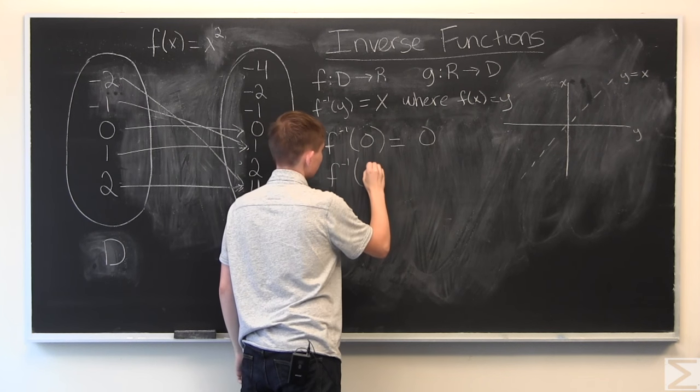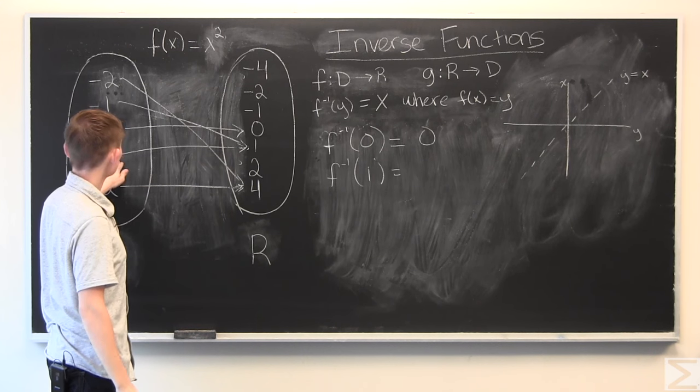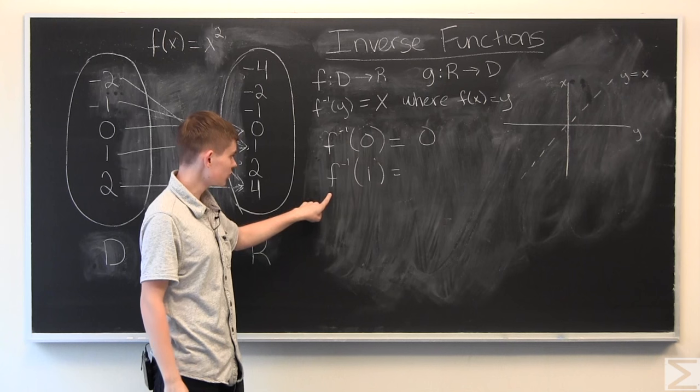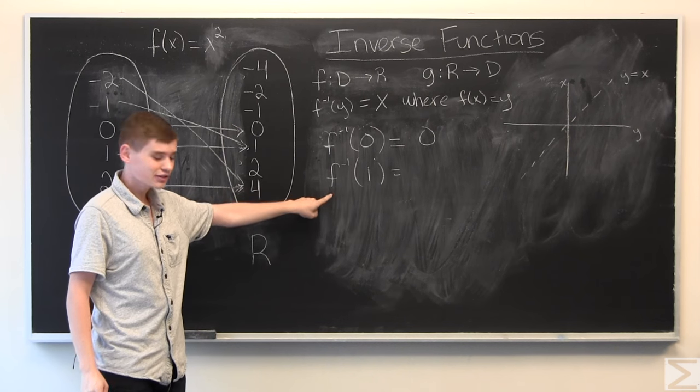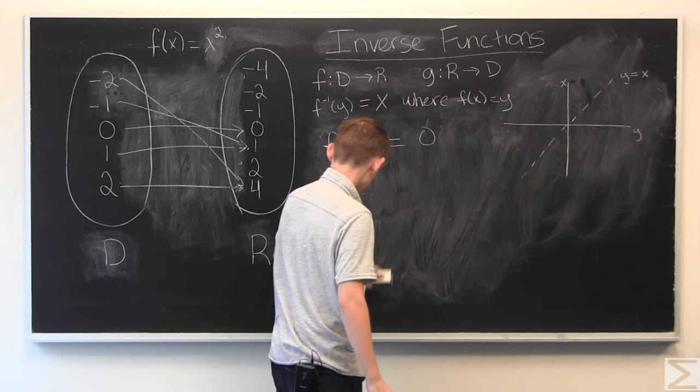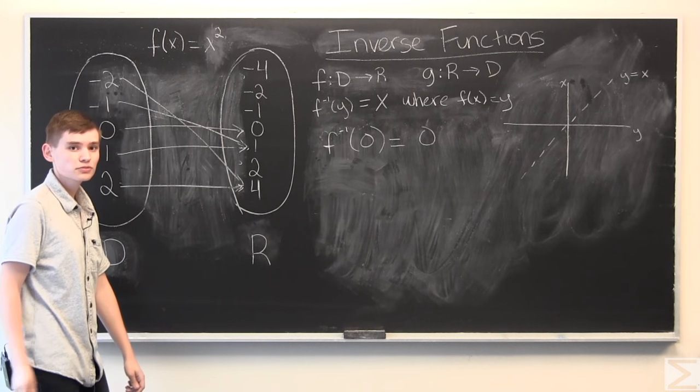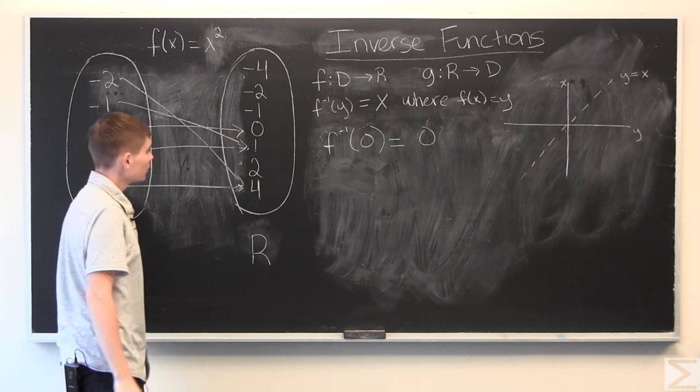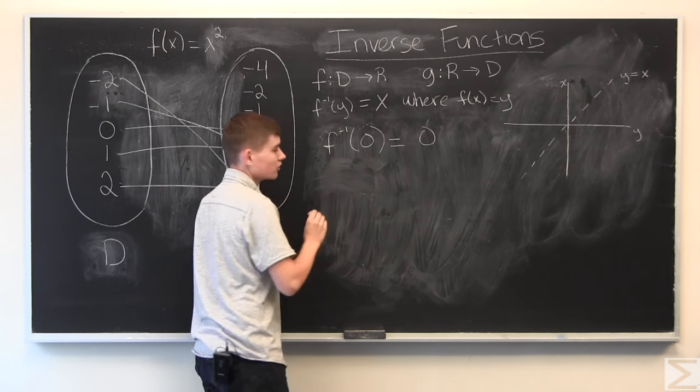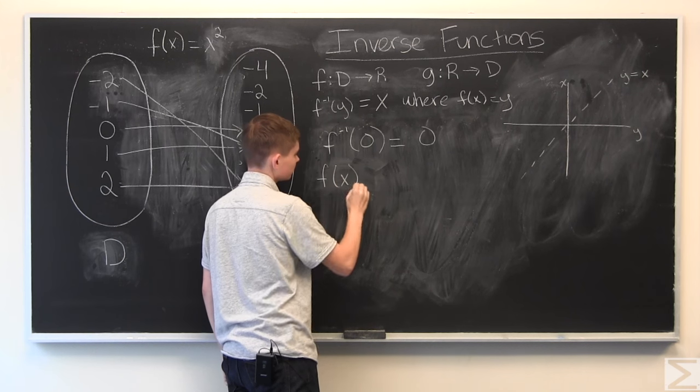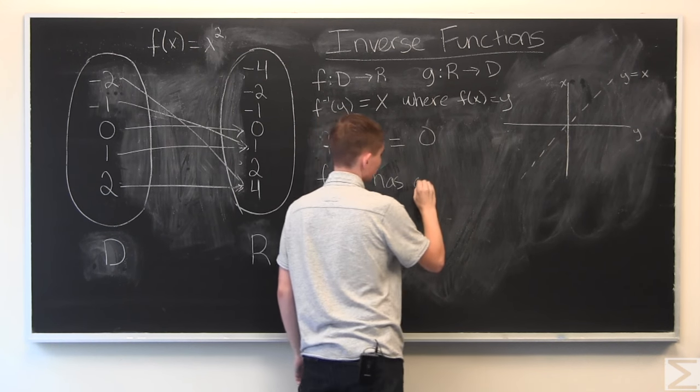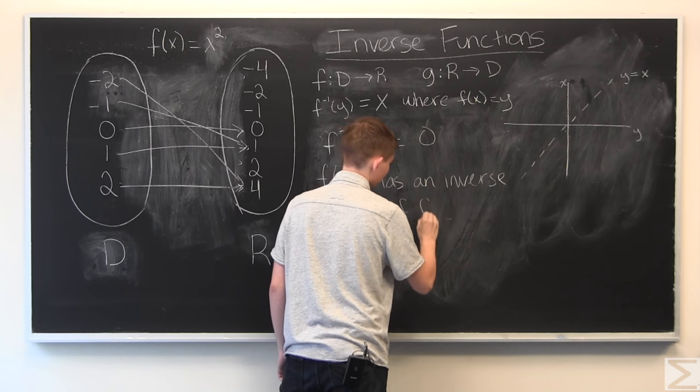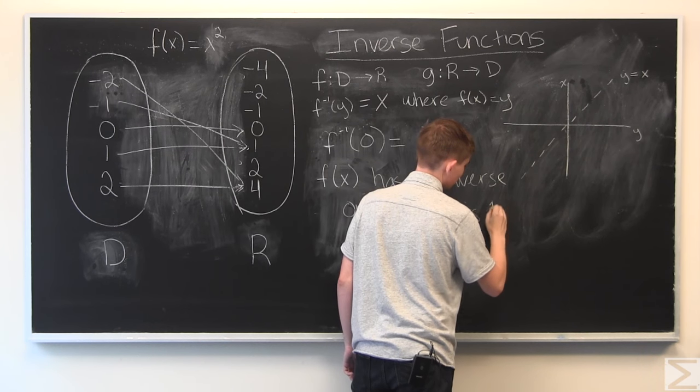But if we try, say, f inverse of 1, we get either 1 or negative 1, which isn't good because functions can only have one output for each input. So, in this mapping, f inverse is not a function, which isn't good. This is because x squared is not 1 to 1. 1 to 1 meaning that for every input, you get one output, and for every output, there is only one input. And that is a true statement among all functions. So, f of x has an inverse only if f of x is 1 to 1.